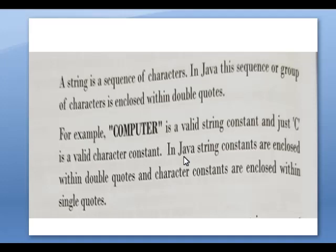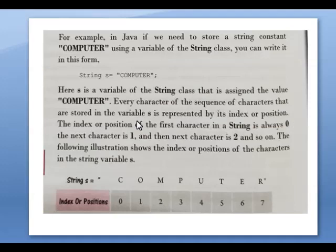In Java, if we need to store the string constant 'computer' using a variable of the string class, we write it as: data type String, then the variable name — here it is taken as 's' — then the value. So 's' is the variable of the string class that is assigned the value 'computer'. The string 'computer' is stored inside the variable s.